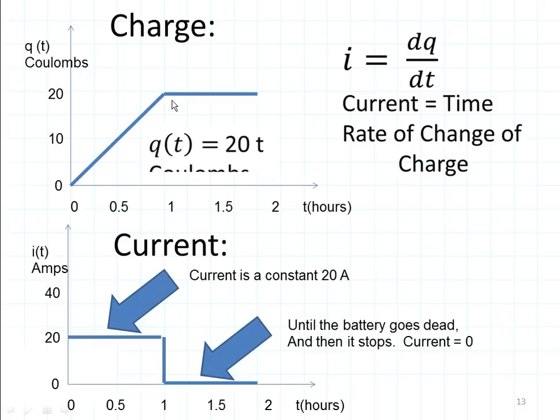What's the slope of the line? It's the rise, 20 coulombs, divided by the run, which is one hour, or it's 20 amps. So here's our 20 amp current, and that goes for one hour.